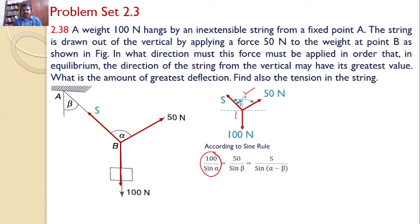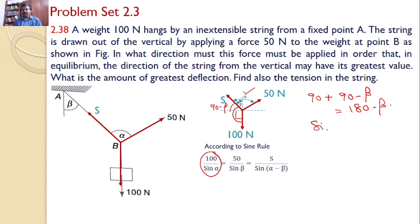Clearly we can see this angle is 90 degrees. And this angle is 90 minus beta, because the string angle from the vertical is given as beta. So the angle between S and 100 newtons becomes 90 plus (90 minus beta), which equals 180 minus beta. Hence it is 50 divided by sine(180 minus beta). But we know that sine(180 minus beta) equals sine(beta), so it is written as 50 divided by sine beta. And force S divided by the angle between the two forces 100 and 50.